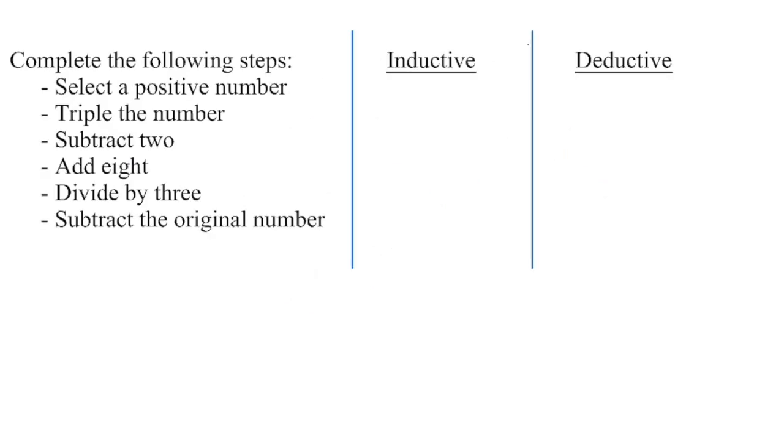We're going to do a little party trick here you can amaze your friends with at your next gathering. I'm going to get you to grab your calculator. And into your calculator, you're going to enter any positive number. You can do this mentally if you want. It might be easier to keep track of it on a calculator though. You're going to multiply by three and press equals. Subtract two, press equals. Add eight, press equals. Divide by three, press equals. And subtract whatever the original number was and press equals. And what answer did you come up with?